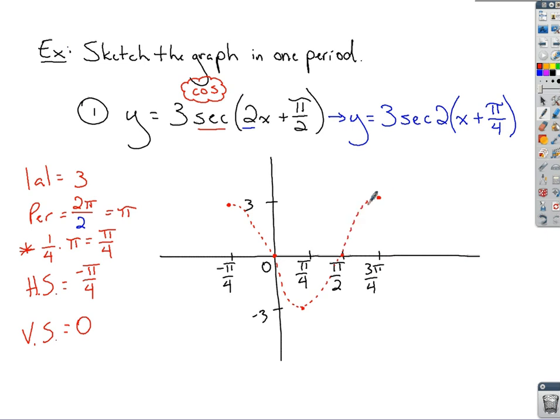Remember, this is not the graph I want. I'm only using it as guidance to come up with secant to get the actual secant graph. Everywhere I see an intercept for cosine, I'm going to draw an asymptote. So there's going to be 2 intercepts. We've got 2 asymptotes.